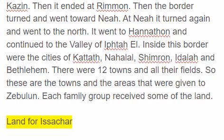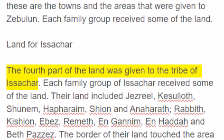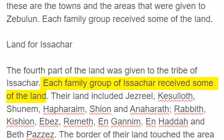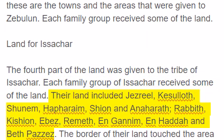Land for Issachar. The fourth part of the land was given to the tribe of Issachar. Each family group of Issachar received some of the land. Their land included Jezreel, Keseloth, Shunam, Hapharim, Shun, and Anaharoth.